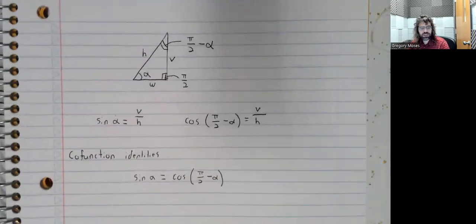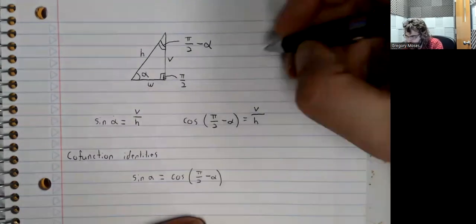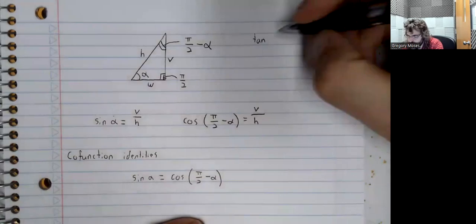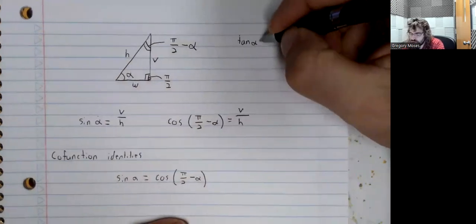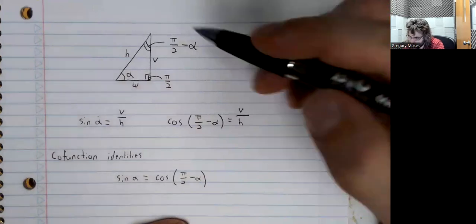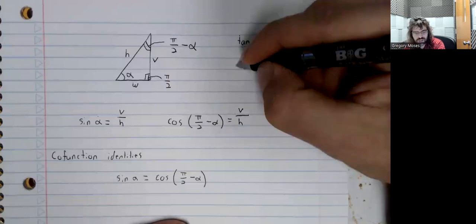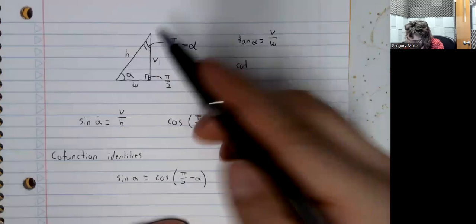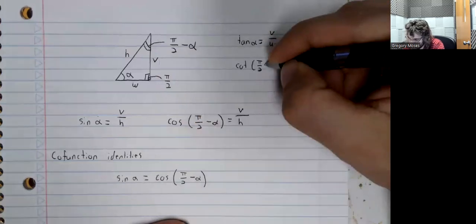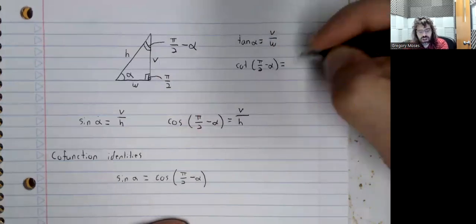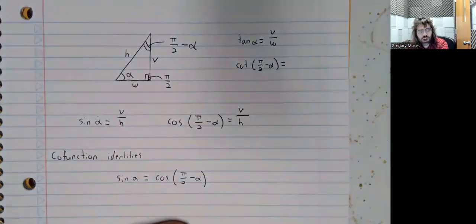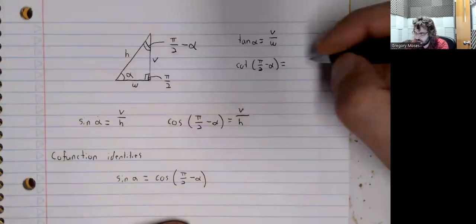And we can repeat this with other functions. For example, the tangent of alpha, opposite over adjacent, v over w. The cotangent of this angle. Let's see. The tangent is the opposite over the adjacent. The cotangent is the reciprocal of that. It's the adjacent over the opposite. The adjacent side here is v. The opposite side is w.